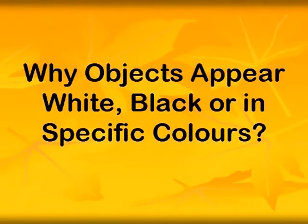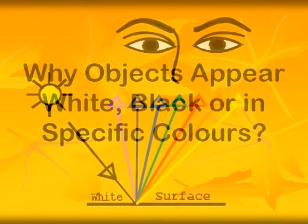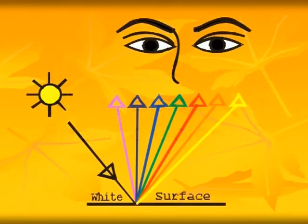Why do objects appear white, black, or in specific colors? White color is the combination of all the colors. When all the visible light rays are reflected, an object appears white.